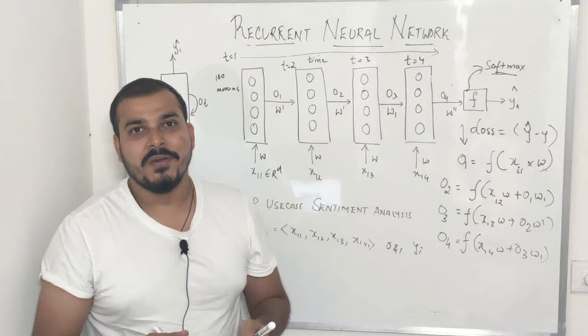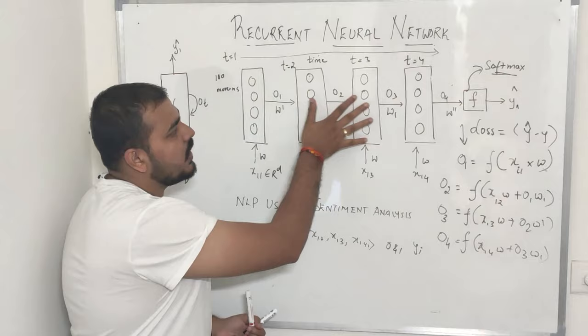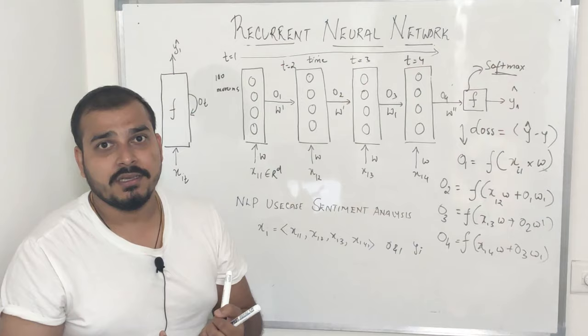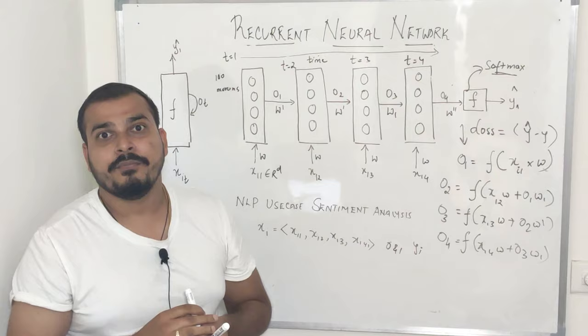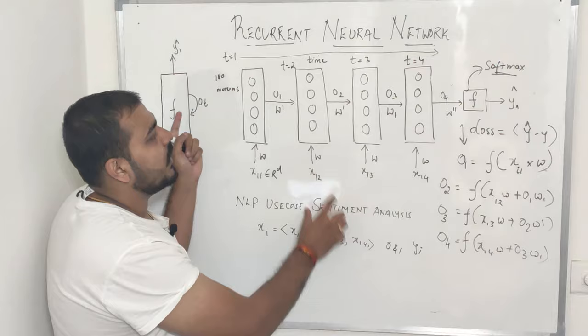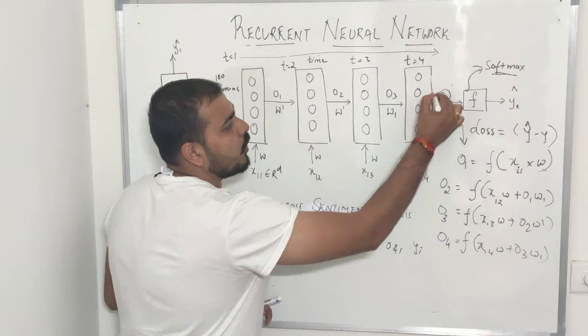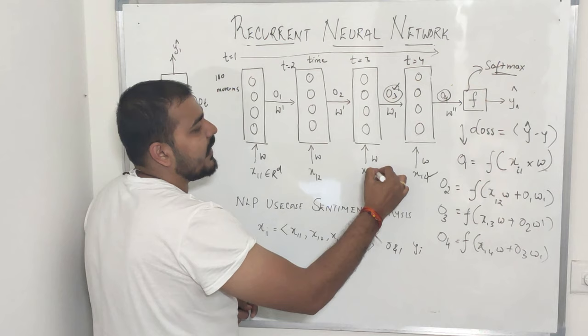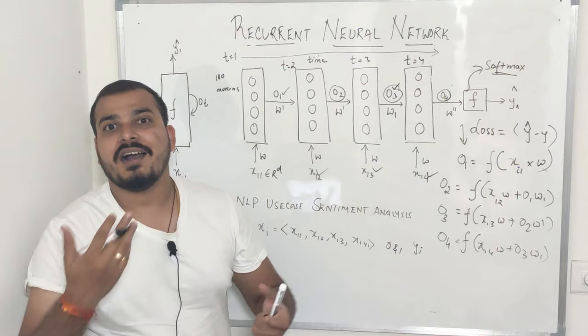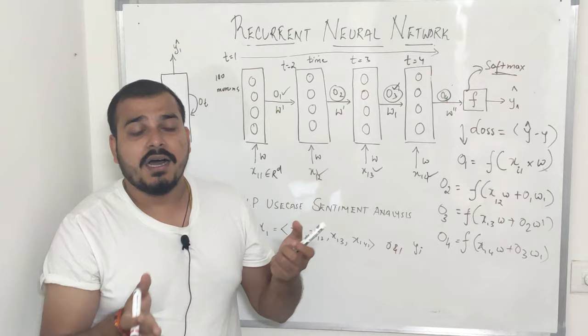Once I've done this, in the backward propagation what will happen — that will be discussed in the next video. But just understand how the forward propagation has happened: we started from here and went till the end just with respect to one statement, where each and every word is represented into vectors of some D dimensions. That depends on the type of vocabulary and the number of words present in that vocabulary. The key point is that output four is dependent on X14 and output three; output three is dependent on X13 and output two — so the sequence information is always maintained.